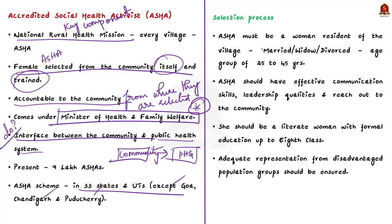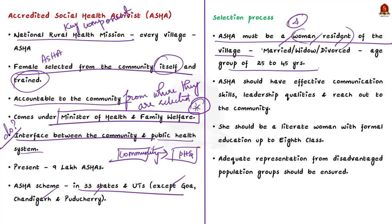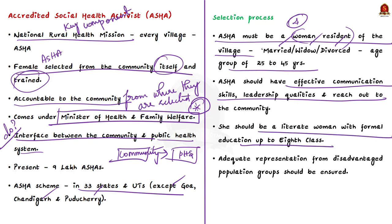There are four key selection criteria for ASHA workers. First, she must be a woman resident of the village — married, widowed, or divorced — preferably aged 25 to 45 years. Second, she should have effective communication skills and leadership qualities. Third and most importantly, she should be literate with formal education up to the 8th standard, though this may be relaxed if no suitable candidate is available.